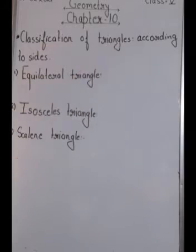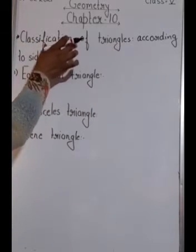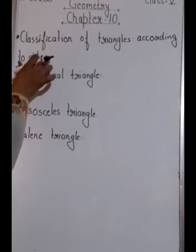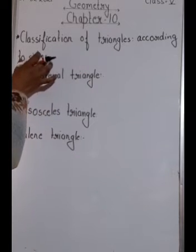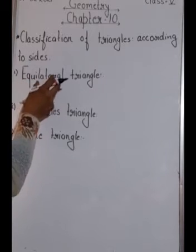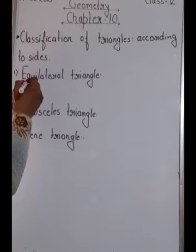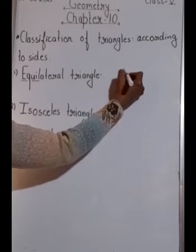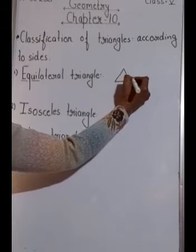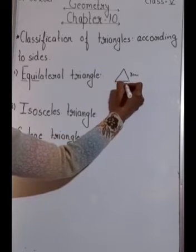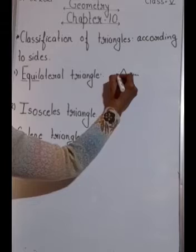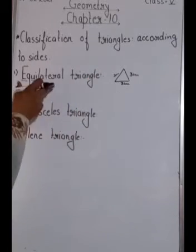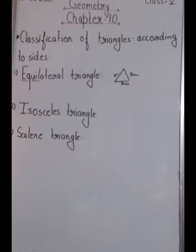Now we look at the classification of triangles. Triangles are classified according to their sides and according to their angles. First, we will study classification according to their sides. The first type is the equilateral triangle. The name itself indicates 'equal,' so if all three sides of the triangle are equal — for example, each side is three centimetres — then it is an equilateral triangle.